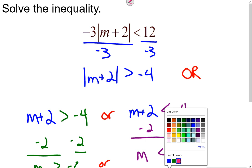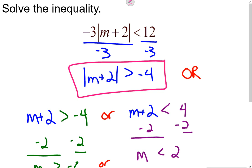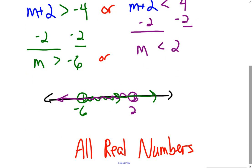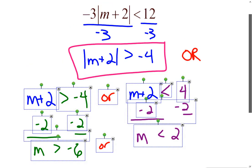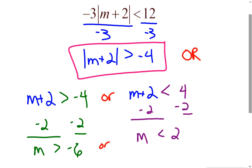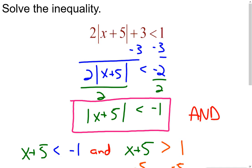Using that same idea, look at the first example. Once I get to the point where the absolute value of something is greater than a negative — the absolute value of anything is always positive. So the left side is always positive and the right side is negative — that's always true no matter what number you put in. That's why all real numbers are solutions. When you recognize that the absolute value of something is greater than a negative, it's all real numbers. When the absolute value of something is less than a negative, there's no solution.